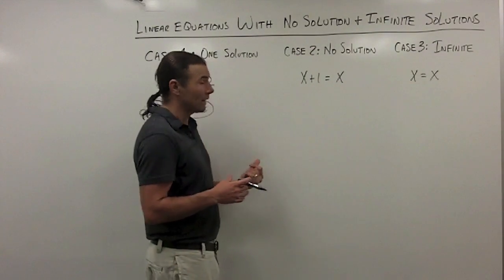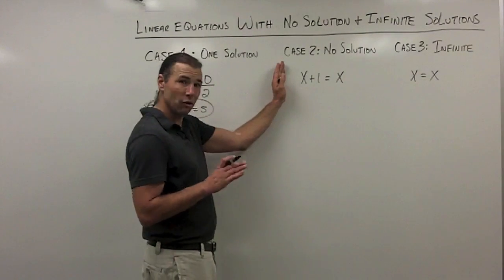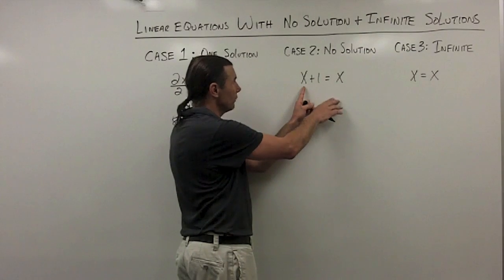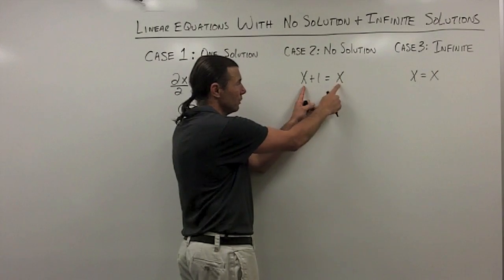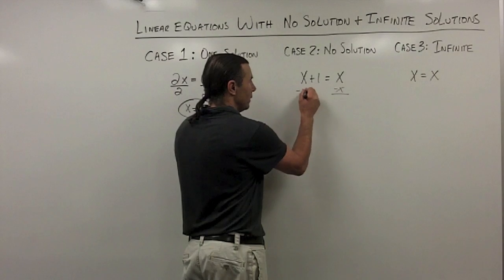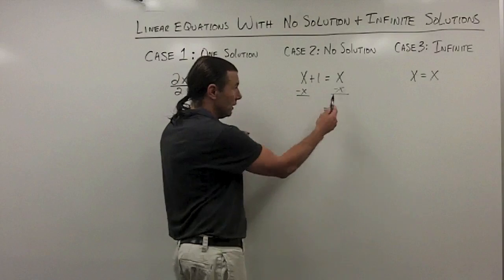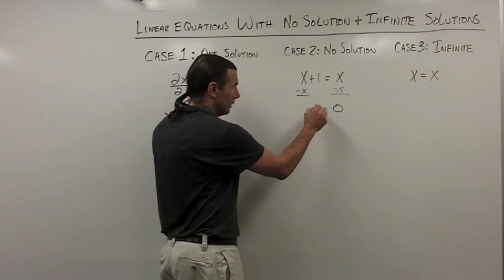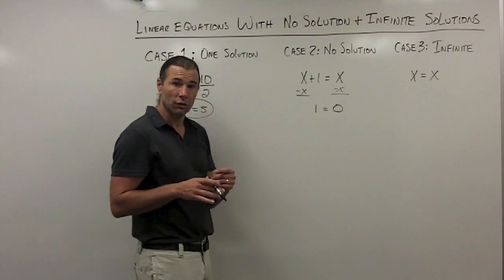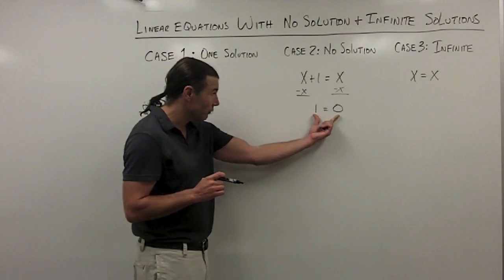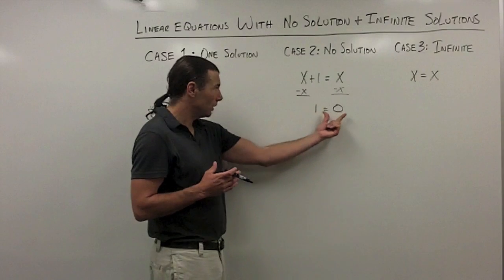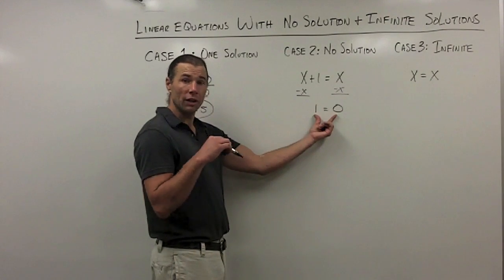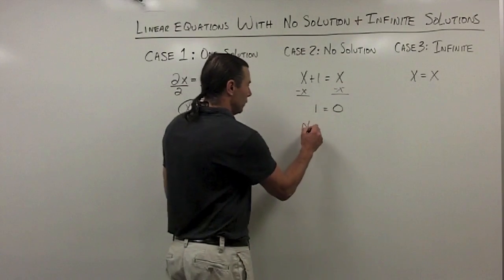Let me go ahead and solve these equations to see what happens. For case 2 — no solution — I have variable terms on both sides, so I need to remove the smaller variable term. They're exactly the same, so I'll subtract x from both sides. On the right side, x minus x is 0. On the left side, x minus x is 0, but I still have the plus 1. So I'm left with 1 equals 0. The variables have dropped out entirely, and I'm left with an untrue statement. Any time you're solving an equation, variables drop out, and you're left with an untrue statement — you know there's no solution.